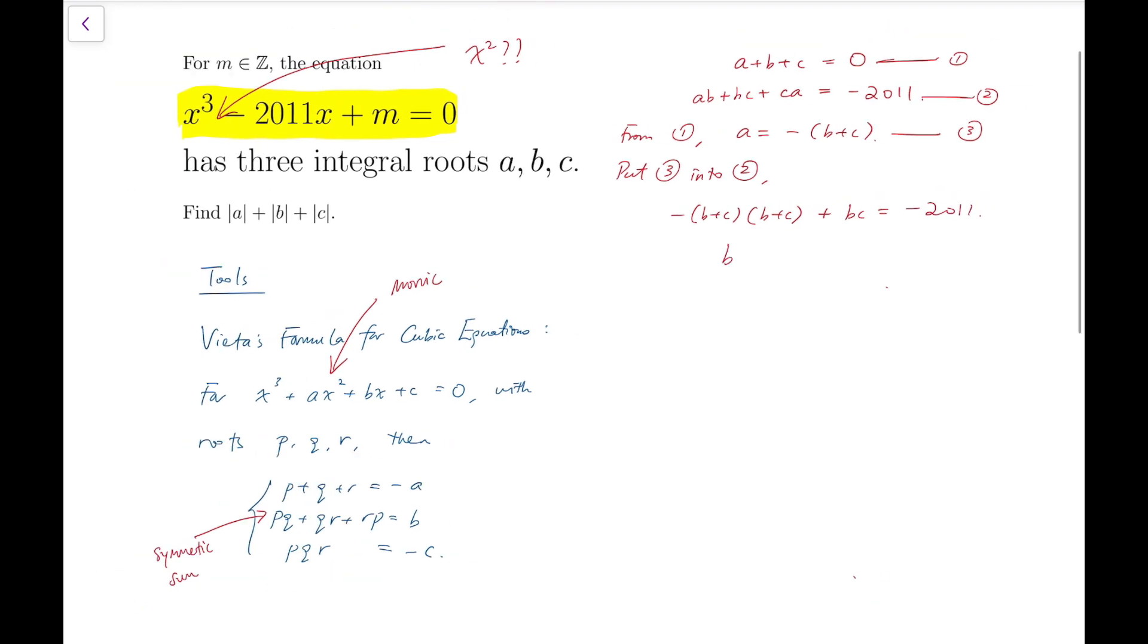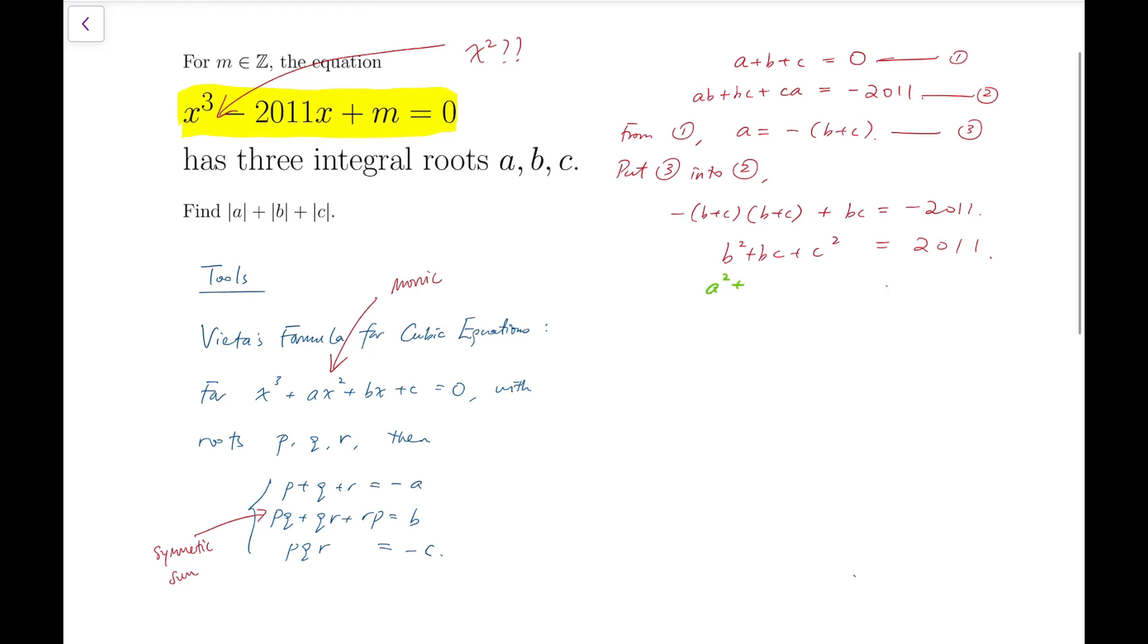And together with bc, the sum is minus 2011. And I can simplify that a bit. And then I will have b squared plus bc plus c squared is equal to 2011. And of course, similarly, I can say that a squared plus ab plus b squared is also 2011, and c squared plus ca plus a squared is also 2011, by symmetry.